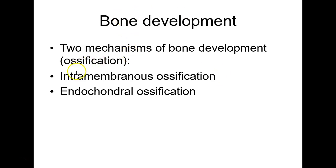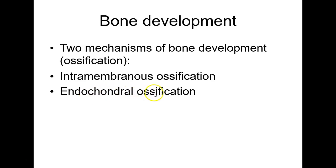Intramembranous — think flat bones of the skull. Endochondral ossification — think long bones: humerus, radius, all that. Those were cartilage once upon a time, and then they turned into bone.